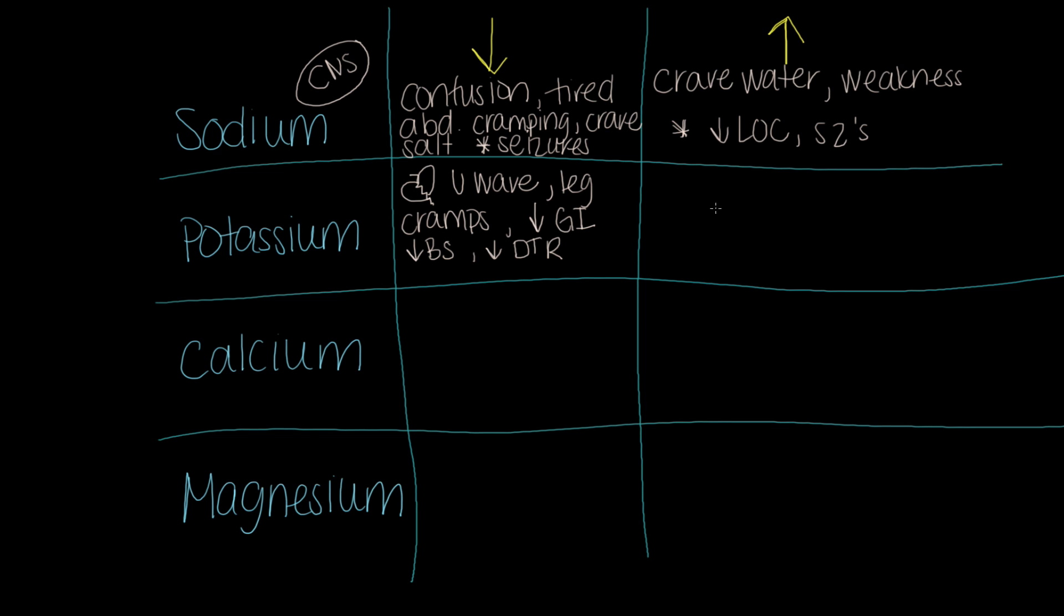If we come here to hyper, cardiac arrest is something that can happen. Just like CNS was the big deal with sodium, cardiac is the big deal with potassium. So this person's at risk for cardiac arrest. Muscle weakness. Look on our other side where we have hypo, we have the cramps. The weakness is what we're going to experience here.